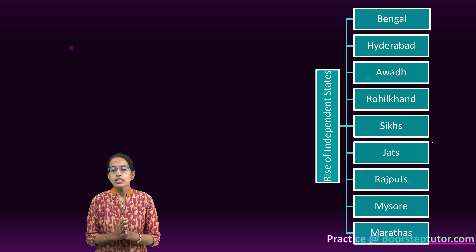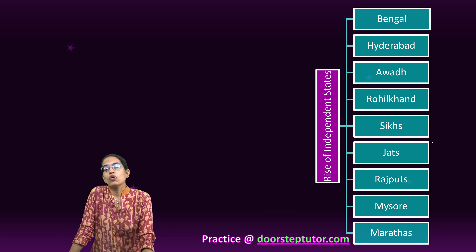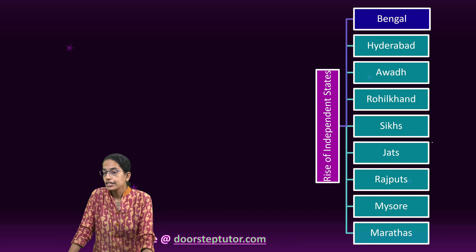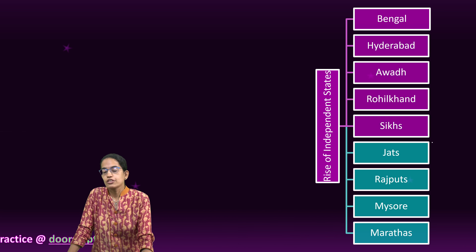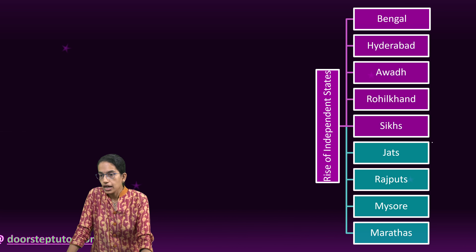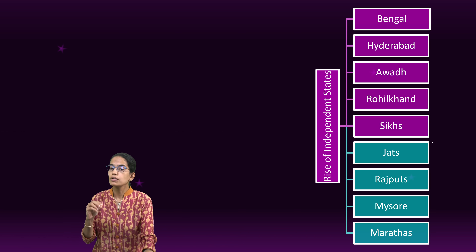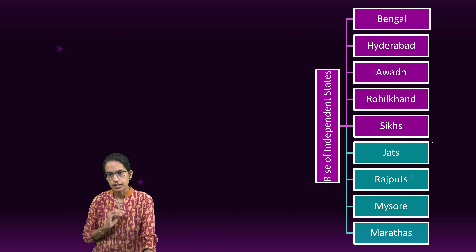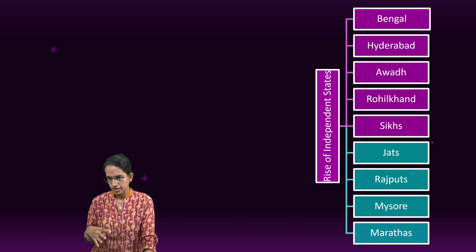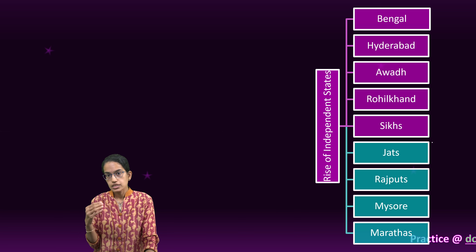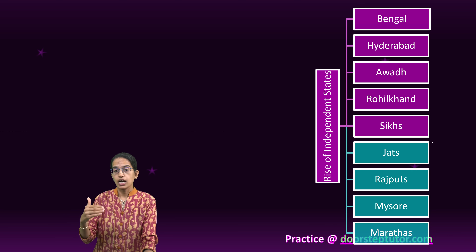There was a rise of various independent states. There are nine different heads under which we would understand these. Those are Bengal — which includes present-day Bihar and Odisha — then the region of Hyderabad, where we have Chin Kilij Khan.